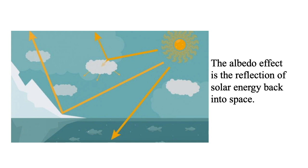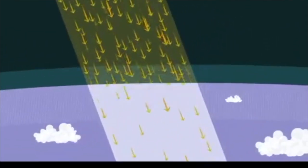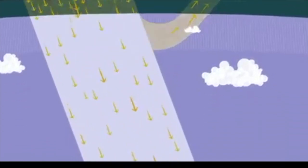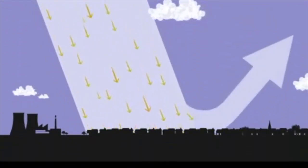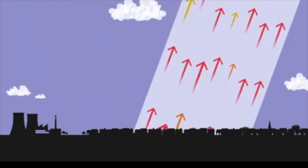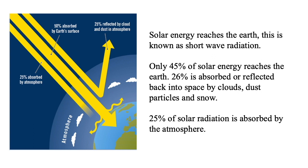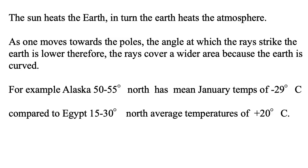In geographic terms, anything white — polar ice caps, snow, dust or debris within the atmosphere, and cloud cover — reflects solar energy and makes an area cooler. Because of absorption and reflection through the albedo effect, only a certain percentage of solar radiation actually reaches the earth's surface as short wave radiation. Only around 45% of solar energy reaches the earth, with about 26% reflected back by clouds, dust, and snow, and about 25% absorbed by the atmosphere. The sun heats the earth, and the earth in turn heats the atmosphere.